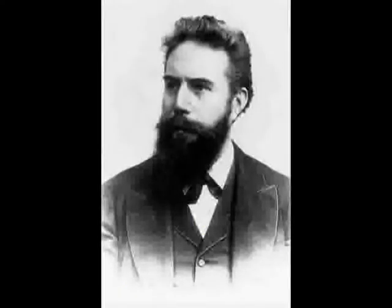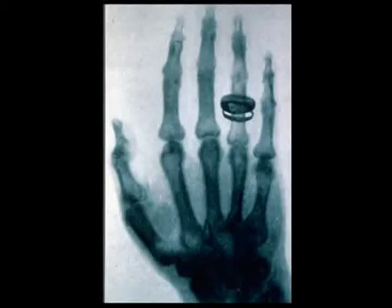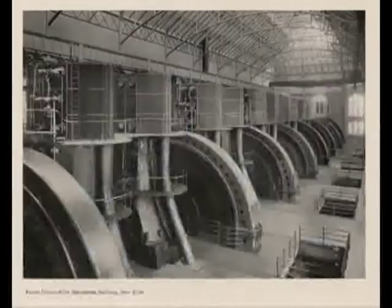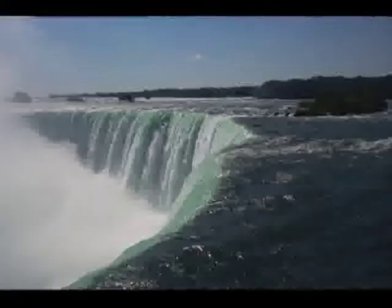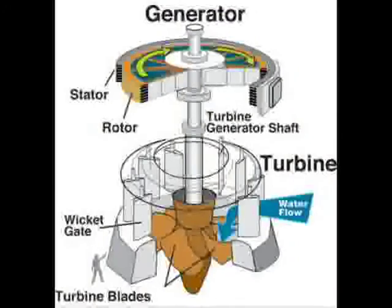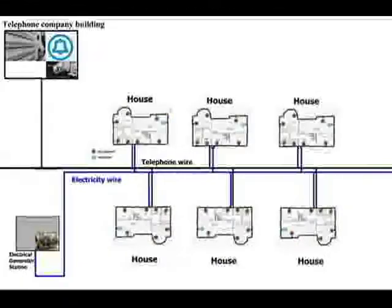In 1895, Wilhelm Roentgen identifies x-rays. Also in 1895, the alternating current electricity generating plant powered by Niagara Falls, funded by George Westinghouse, goes online and provides electricity for the city of Buffalo, New York.